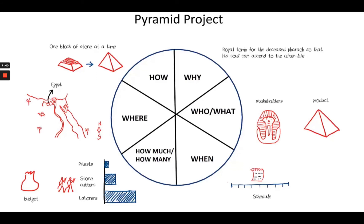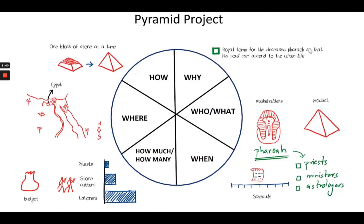Let's go through the six slices of the pie to get a high-level summary of the pyramid project. The first question we ask as a project manager is: why are we doing this project? The answer, shown in the why portion of the pie, is to build a royal tomb for the deceased pharaoh so that his soul can ascend to the heavens in his afterlife. Then comes the question of who the most important stakeholders are. The whole project is dedicated to one person — the pharaoh — since the structure is being built for him. Other stakeholders could include ministers, priests, astrologers, and other people of importance who may advise the project manager on the expectations of the pharaoh.